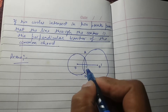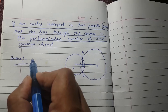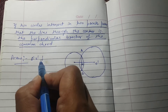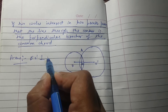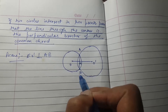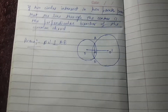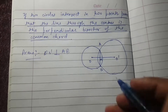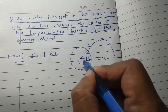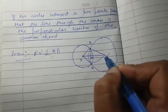Let this intersection point be M. We have to prove that OO' is perpendicular to AB. For doing this we need some construction — we will join OA, OB, O'A, and O'B.